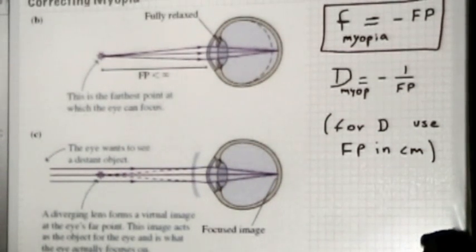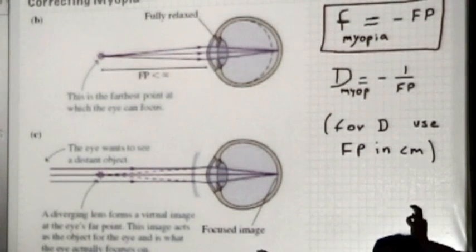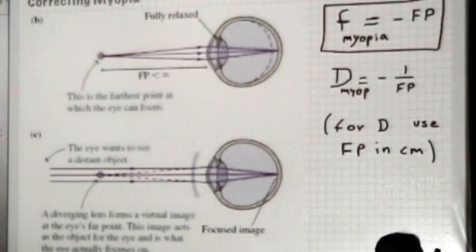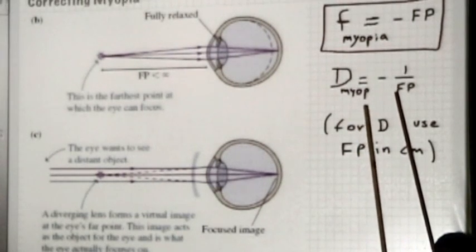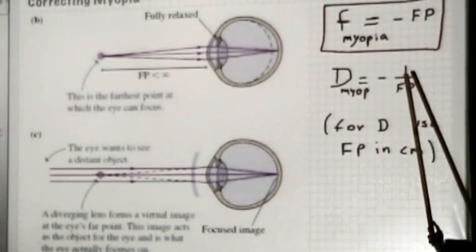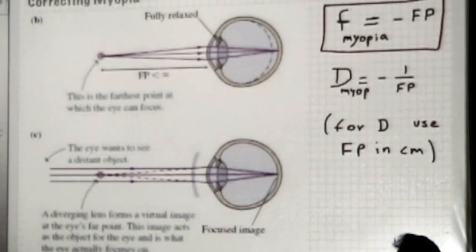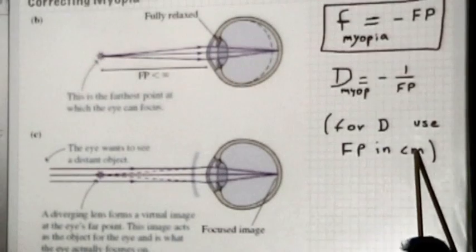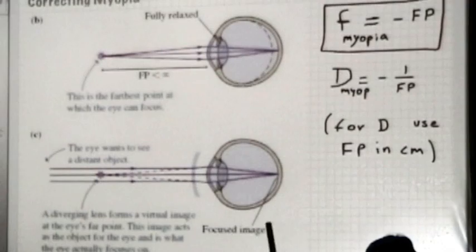When you go to the eye doctor's office, they ask you to remove your glasses and read the lowest line of letters you can. That tells the doctor what your far point is. Knowing the far point, it is straightforward to determine the diopters you need, because the diopters are defined as one over the far point in meters — that's called the power of the lens. So if your far point is 30 centimeters, that is 0.3 meters, and 1 over 0.3 gives you 3.3 diopters.